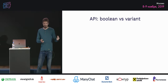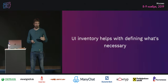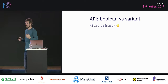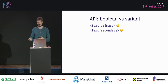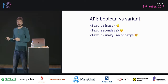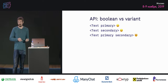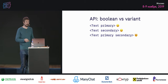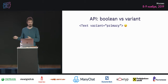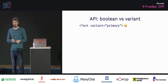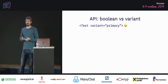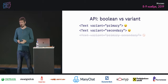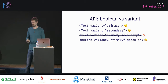By defining all these sets, we can create a prop like 'variant'. We say 'Text primary' and it renders primary text, 'Text secondary' renders secondary text. But there's a problem — inevitably someone will try to do 'Text primary secondary' and you can't decide what it should be. So instead of using Boolean props, use variant props. The variant can be named differently — 'size', 'importance', whatever. That's a much better approach because the impossible state is now impossible.